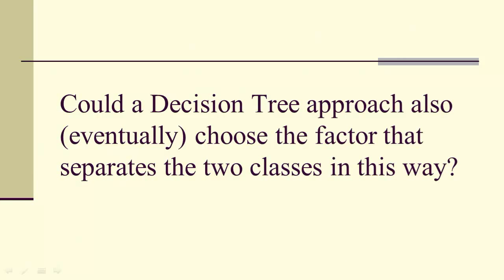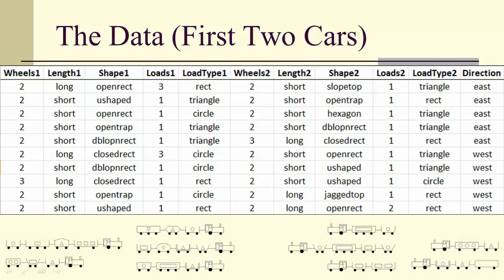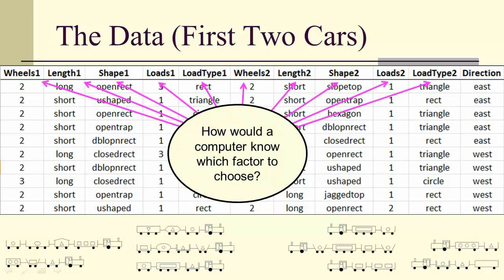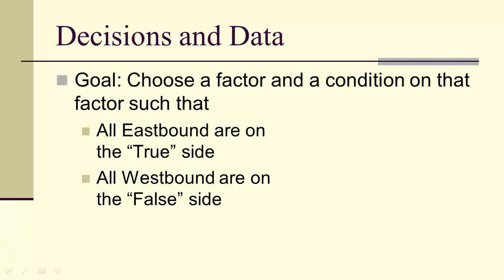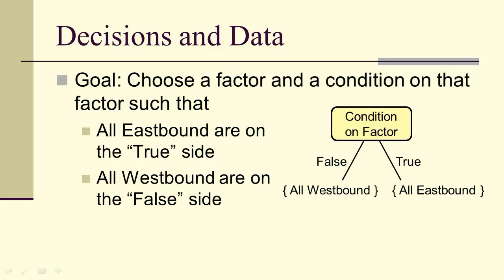Can we do this with a decision tree? Let's see if we can and see how it would work. This is the actual data. We have data for all the cars, but we're only going to look at the data for the first two cars because that's all we really need to focus on. How would a computer know which of these factors to choose and how to assign conditions that would separate the different directions from each other? The key is that we're going to choose a factor and a condition on that factor such that all the eastbound are on the true side and all the westbound are on the false side.